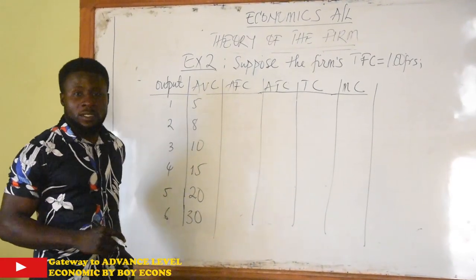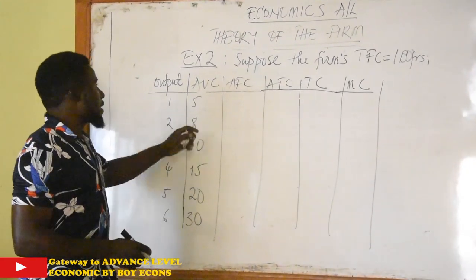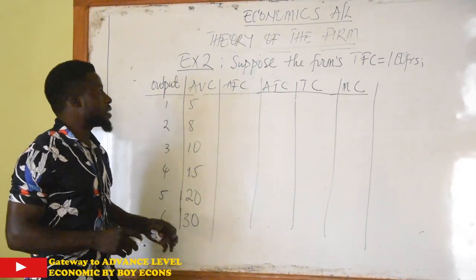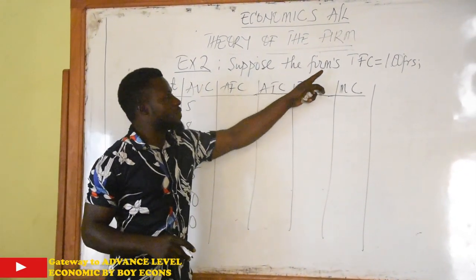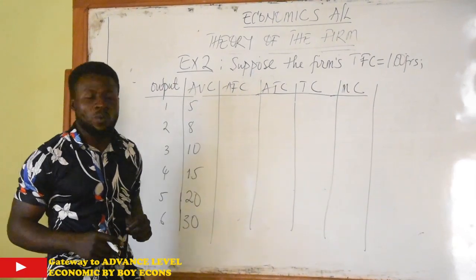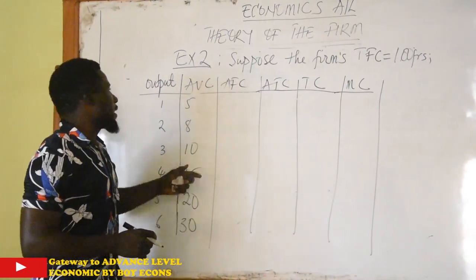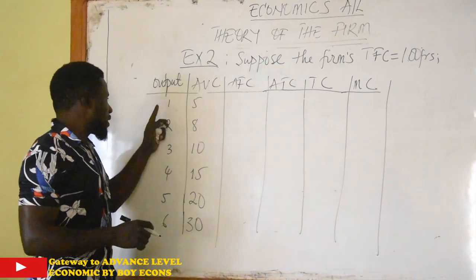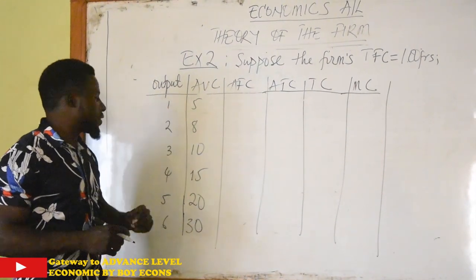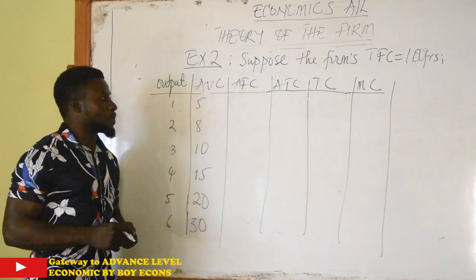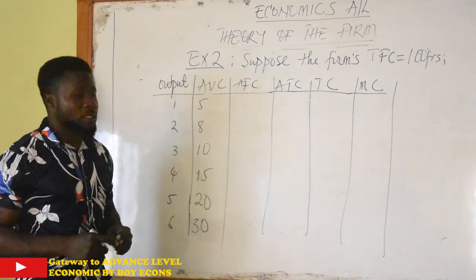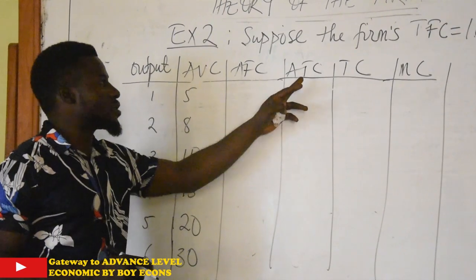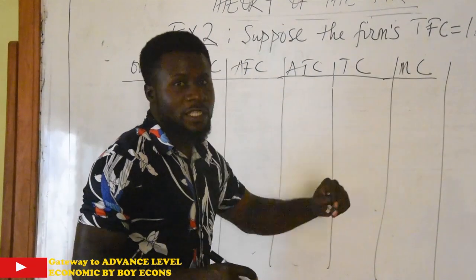Let us look at Exercise 2, which says: suppose the firm's total fixed cost is 100 francs. You have your output given, ranging from 1 to 6, and your average variable cost given. You are supposed to complete this table by calculating the values of average fixed cost, average total cost, total cost, and marginal cost.